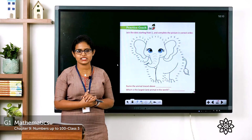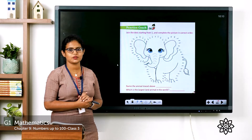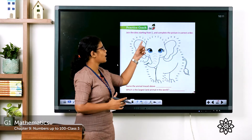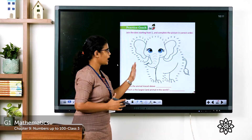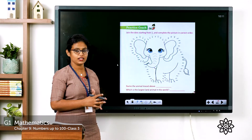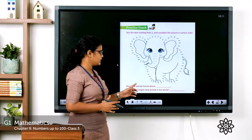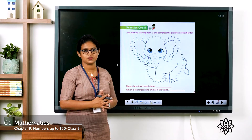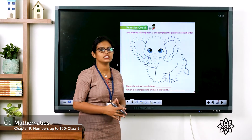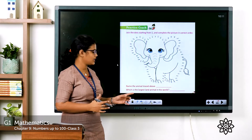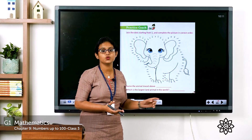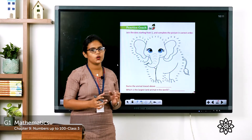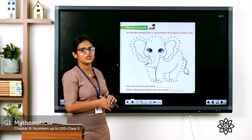Let's move on to the exercise, page number 127. Here you have to join the dots from 1 to complete a picture. You have two questions: name the animal traced above — when you join the dots you will get the picture of an animal, write its name in the space given. The next question: which is the largest land animal in the world? You can do this by yourself.